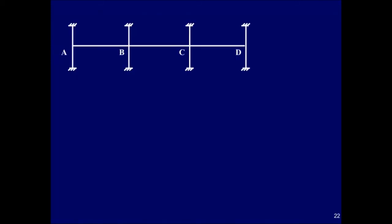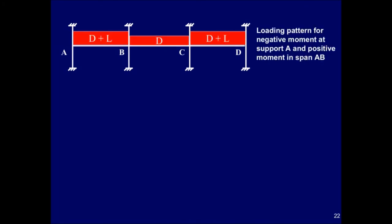These loading patterns will be investigated for a three-span frame. In the first loading pattern, the live load is applied on the exterior spans. This pattern produces the maximum negative gravity moment at supports A and D, and the maximum positive gravity moment in spans AB and CD.